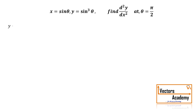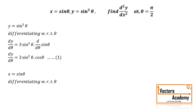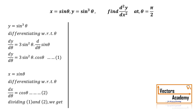We have taken y and differentiated with respect to θ — that gives equation 1. Then we differentiate x with respect to θ to get equation 2, and by dividing both of them we get dy by dx. So dy by dx is 3 sin² θ.